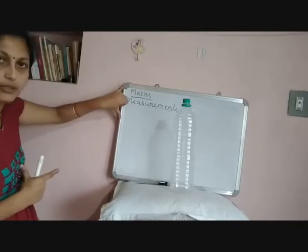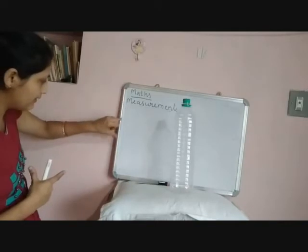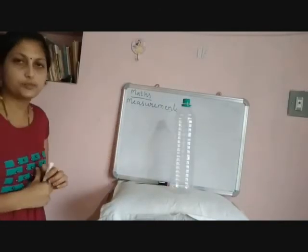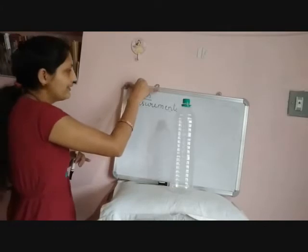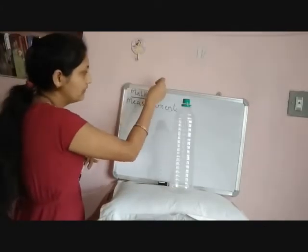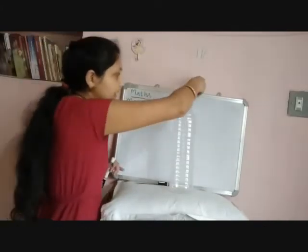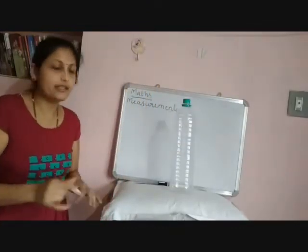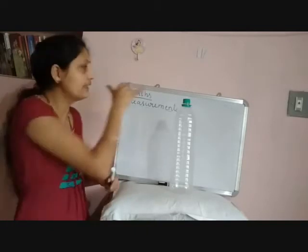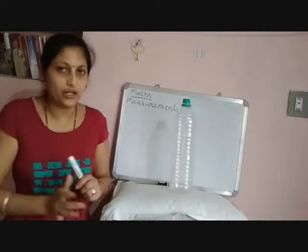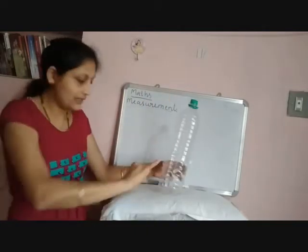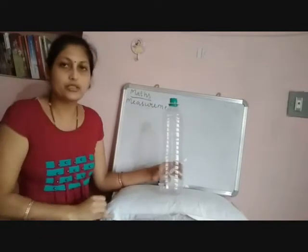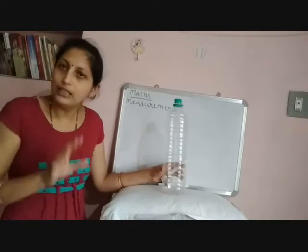If you measure from here to here like this, it is called hand span. So this board is one, two, three hand spans long — I can say it is three hand spans long. In the same way, for this bottle, it is nearly two hand spans long.